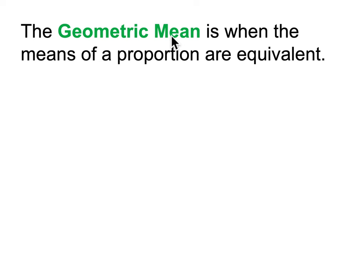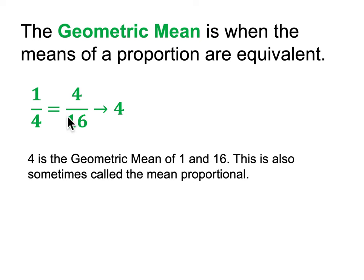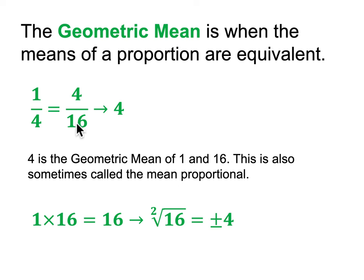Now, speaking of means and proportions, we should talk about geometric means — there are other means beyond arithmetic and geometric, and yes, there is a geometry to this, but we want to first discuss the algebra. When the means are equivalent, that's a geometric mean. For example, 1 to 4 equals 4 to 16 — these are equal ratios, and the geometric mean is the 4s. This says the geometric mean of 1 and 16 is 4. Notice that 4 is the square root of 16. If you have two numbers like 1 and 16, find the geometric mean by taking the square root of their product.